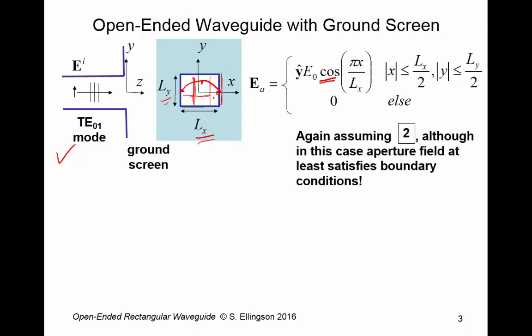Now just pause for a minute and note that we have an approximation embedded here. And that's this good old approximation two in the box that I mentioned in previous lecture. That is, what we're assuming is that the field in the aperture here that we should be concerned about is the one that is determined completely by the incident TE01 mode.